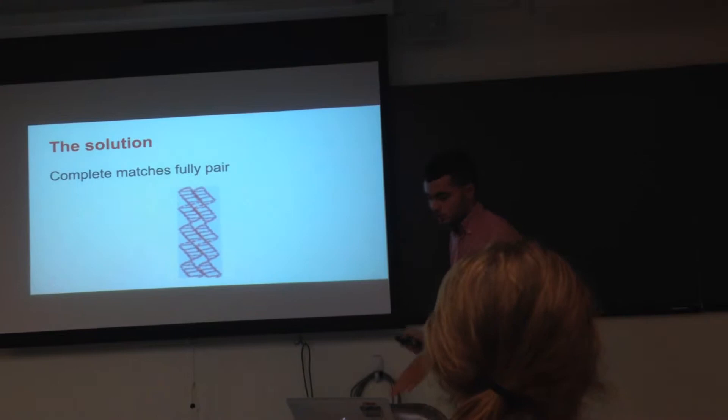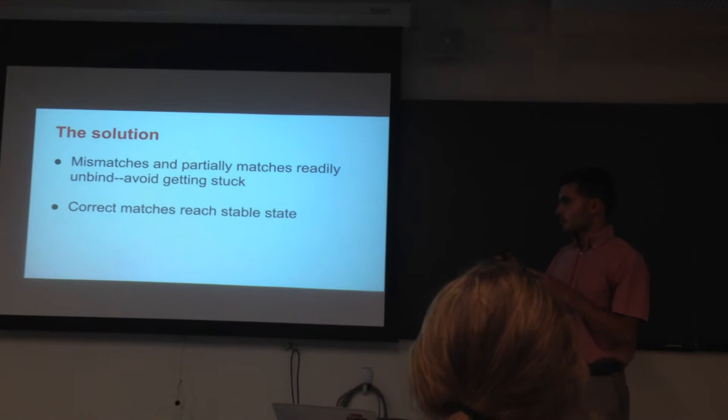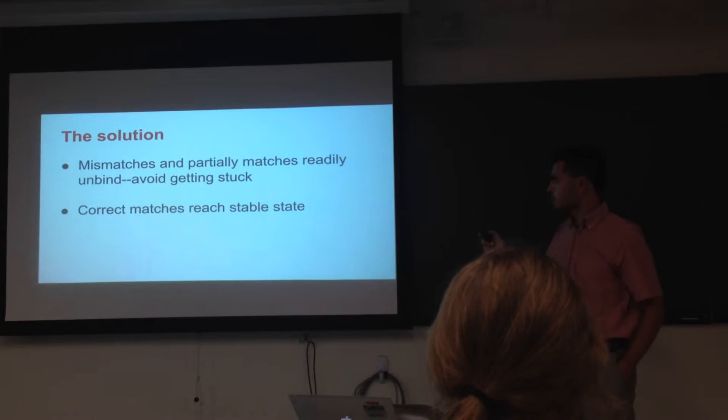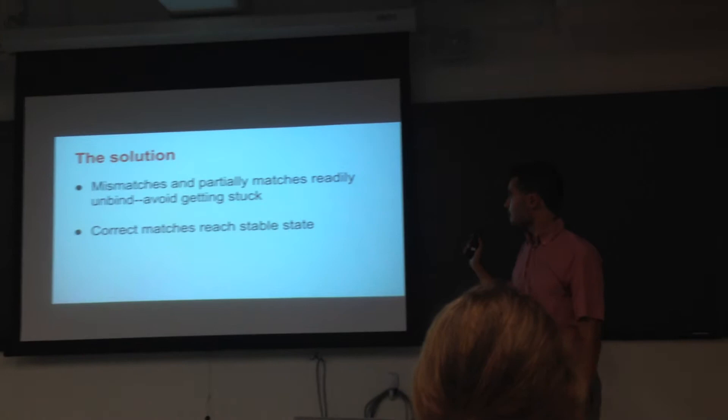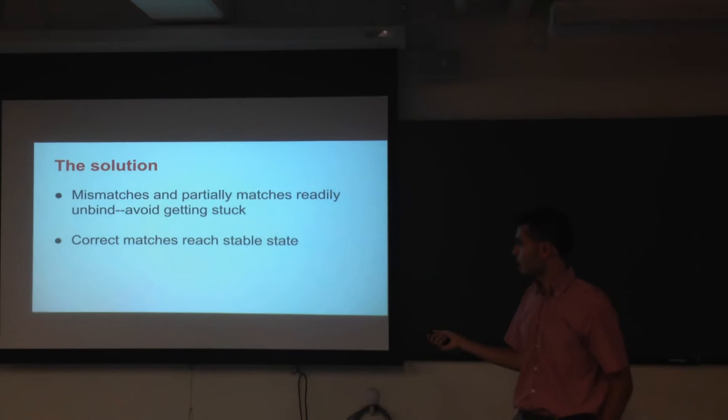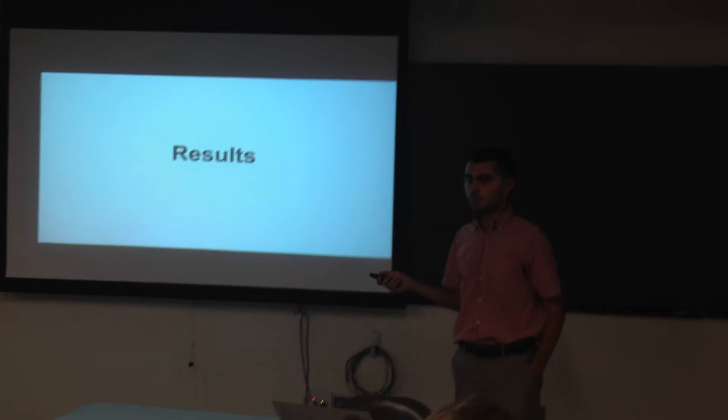The advantage of this system is that it ensures that these mismatches and partial matches, even the ones that have some short regions of accidental homology, don't get stuck with each other. They come apart very easily. Don't have to deal with a lawyer or anything. But that also ensures that the correct matches do reach that stable state, which you absolutely want in a self-assembly system. This has been our hypothesis as to how DNA pairing works based on that angle and the fact that you test at multiple stages. So now how do we confirm this hypothesis?